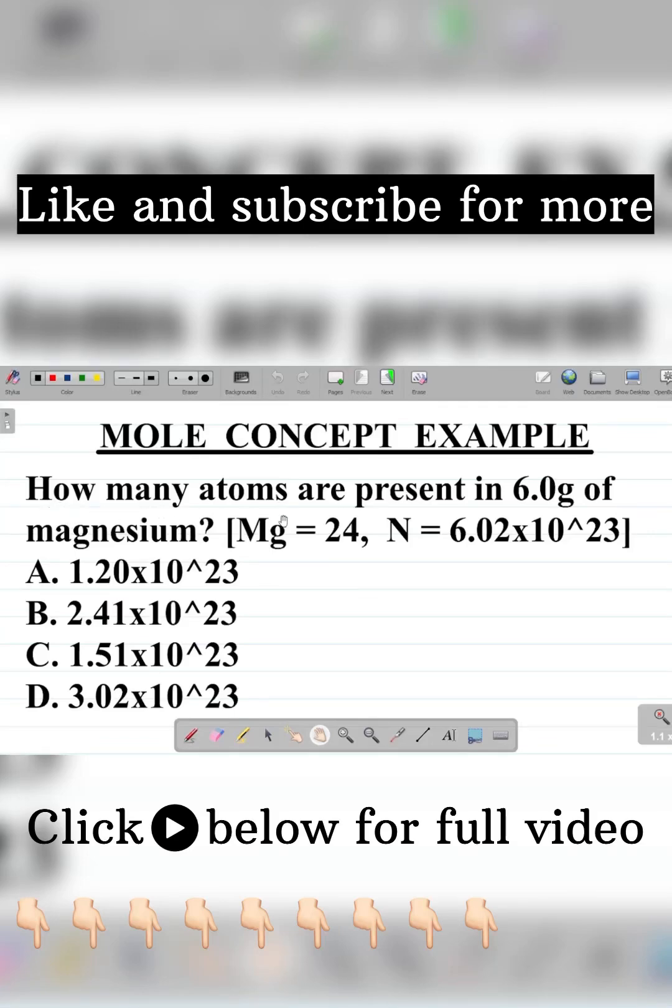First things first, the question here says, how many atoms are present in 6.0 grams of magnesium?